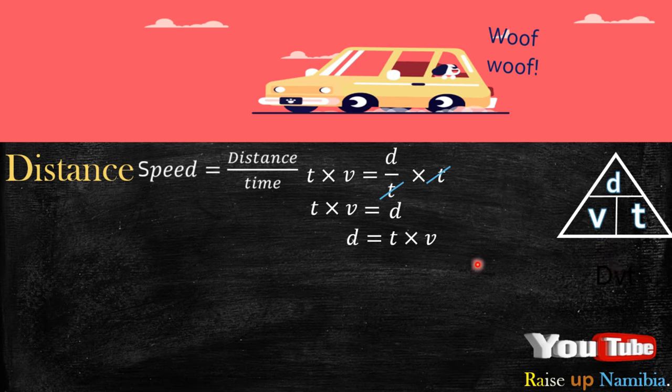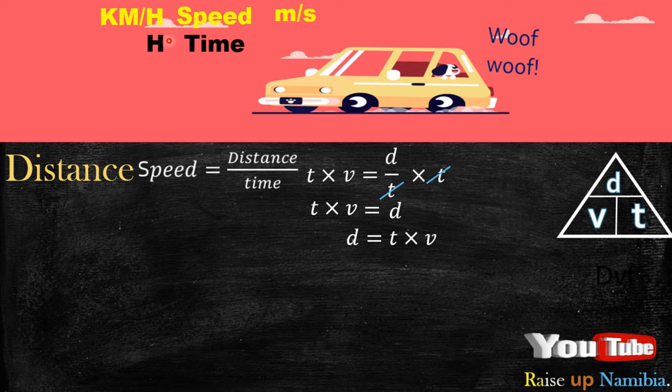Now good. Since we have our equation here for distance, let's give our scenario here some figures. Now before we give it some figures, let me just point out something: once your speed is in kilometers per hour, your time should be in hours. If your speed is in meters per second, then your time should be in seconds.